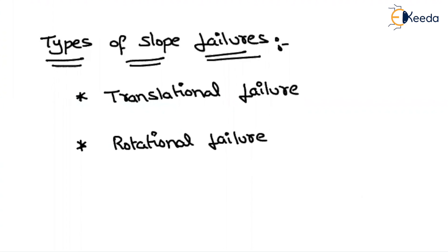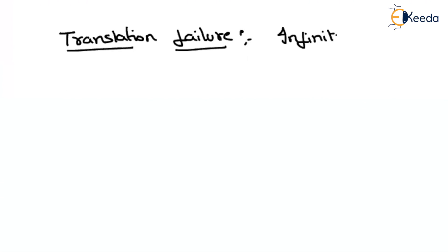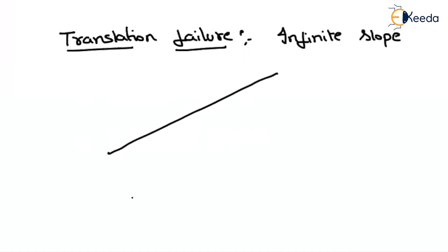First, let us understand what is meant by Translational Failure. Normally, this failure will be observed in infinite slopes. So if there is any infinite slope, this type of failure we can see there. Let us consider a slope that is extended a very long distance.